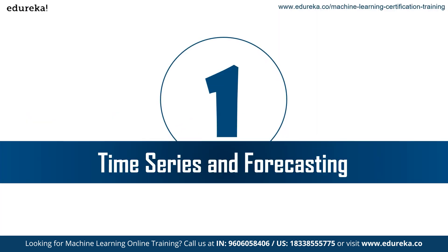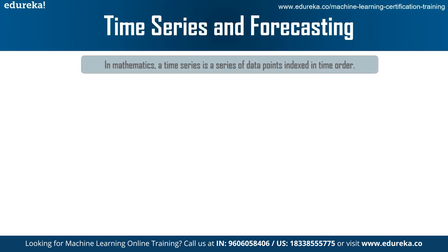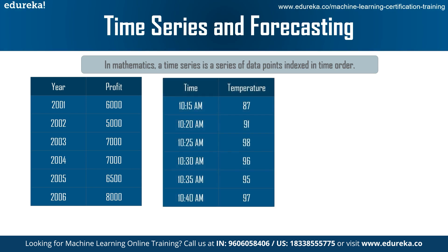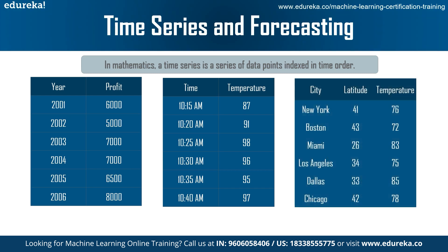In mathematics, a time series is a sequence taken at successively equally spaced points in time — thus it is a sequence of discrete time data. The time can be of any order such as years, months, hours, or minutes. For example, analyzing profits in a company over many years is a time series, as is checking the weather at different timestamps. However, checking temperature over different metrics such as city or latitude is not a time series.